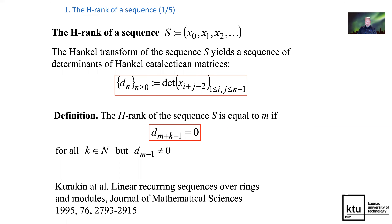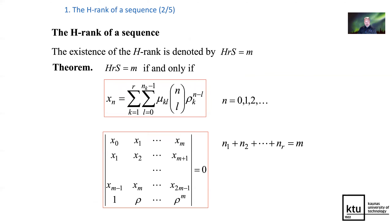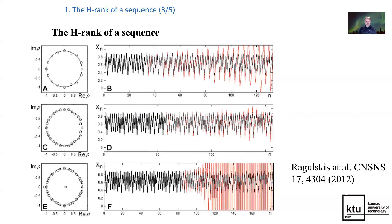The rank of a sequence is based on the concept of the Henkel transform, where the original scalar time series is transformed into the determinants of Henkel catalectical matrices. The rank of a sequence is equal to m if all higher-order determinants than m are equal to zero. In order to reconstruct the mathematical model of a sequence, we use the special characteristic equation for the Henkel matrix. Note the difference between the standard eigenvalues and Henkel eigenvalues, and this model reconstruction can be used to simulate and approximate different processes.